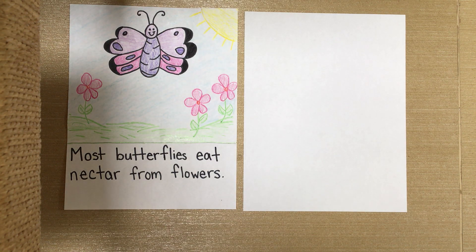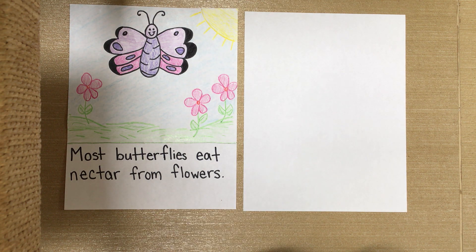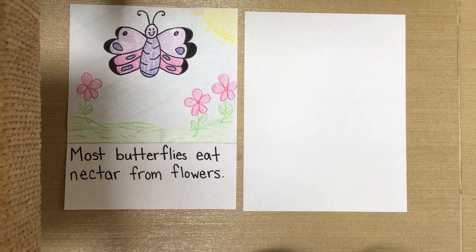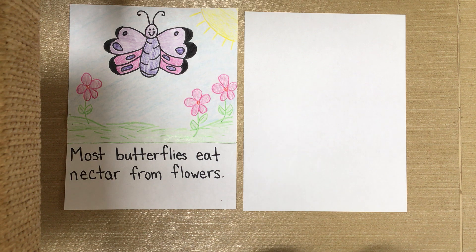Hello, kindergartners. I hope that you're all being able to enjoy a little bit of extra time with your families while we're doing our remote learning. So recently, we've been learning about butterflies and we've discussed the life cycle of butterflies and different characteristics or things that butterflies have. So today, we're going to be learning how to draw a butterfly and then we're also going to recall or remember some of the stuff that we've learned about butterflies and we're going to write a sentence about it.